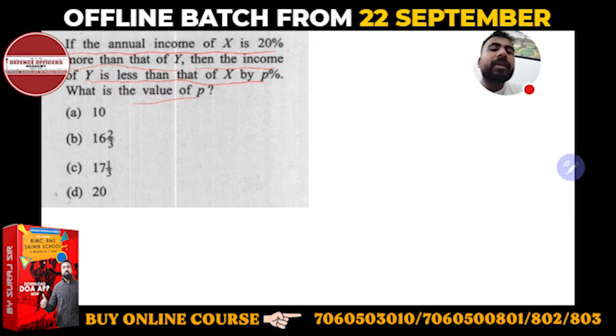So percentage-wise, you can take any value, and options are also given in percentage P percent. You can take any value. Now, the annual income of X is 20% more than Y, so if you take Y is equal to how much? Hundred. X automatically...